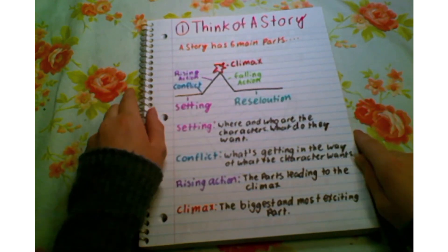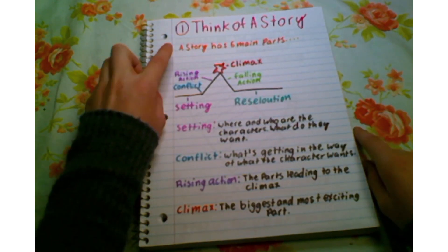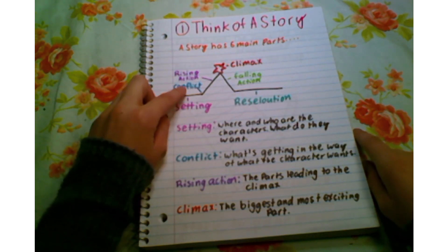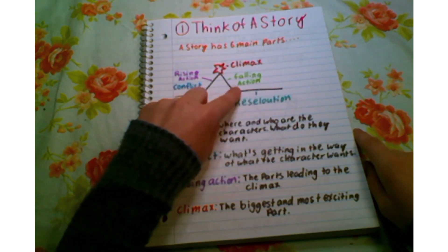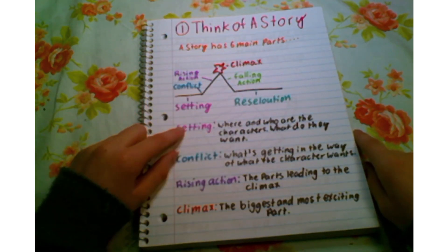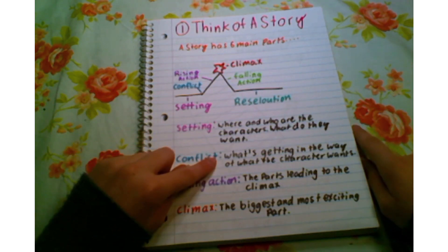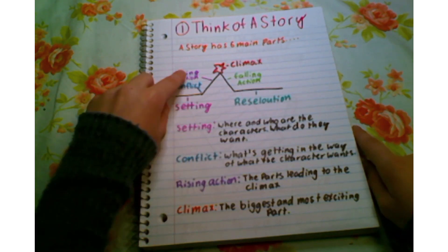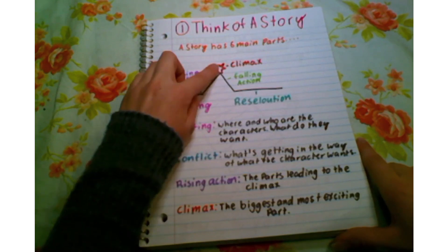The first step is to think of a story. It's kind of hard because it's hard to think of stories for some people, but a story has six main parts: a setting, a conflict, a rising action, a climax, a falling action, and a resolution. The setting is where and who are the characters and what do they want. The conflict is what's getting in the way of what they want. The rising action is the parts leading up to the climax.